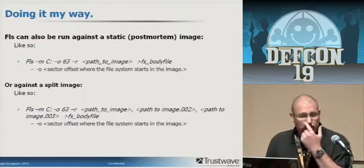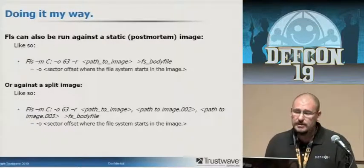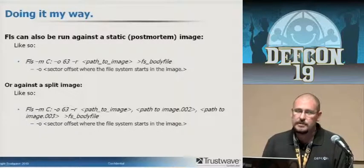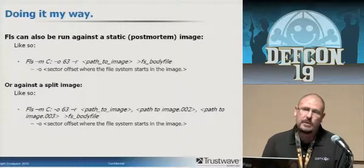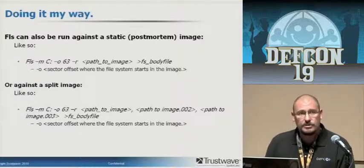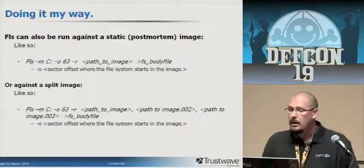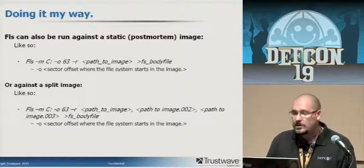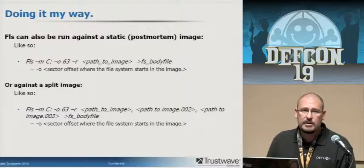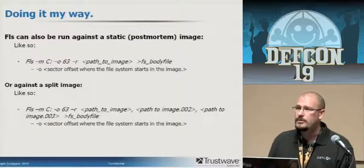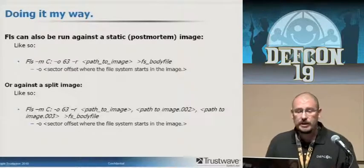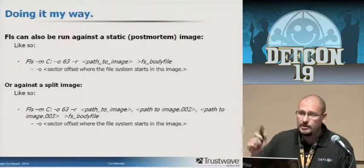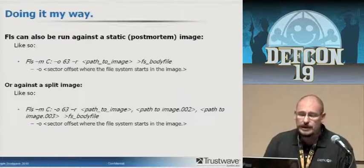FLS can also be run against a static or post-mortem image — same command, slightly different with an offset. FLS -M, name your device. You sometimes have to add an offset where the actual file system starts; sometimes it picks it up by itself. Dash R for recursive, then point it at wherever your image is sitting — a USB drive, local drive, wherever your evidence is. The sector offset can be found with the MMLS tool, also free and part of the Sleuth Kit. You can also do this against a split image — just list 001, 002, 003 and it works the same way.